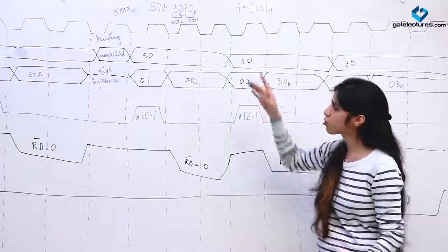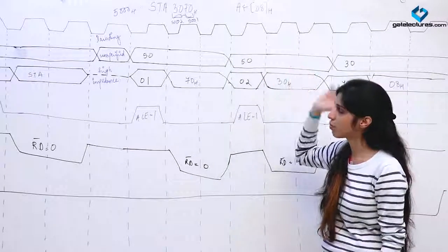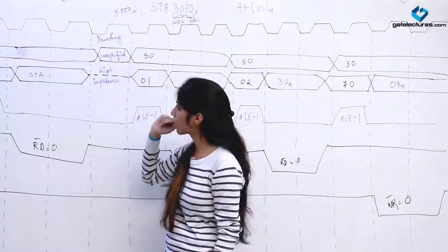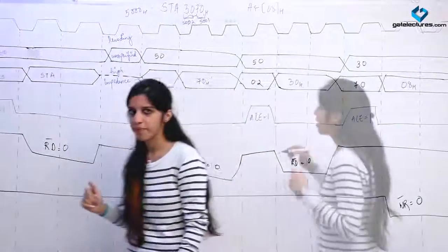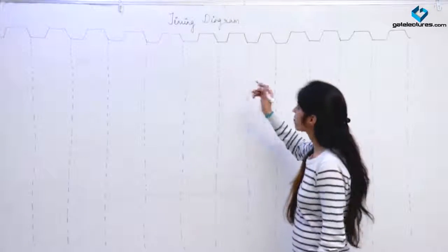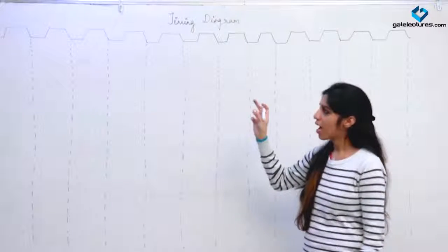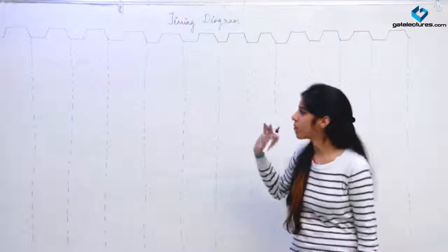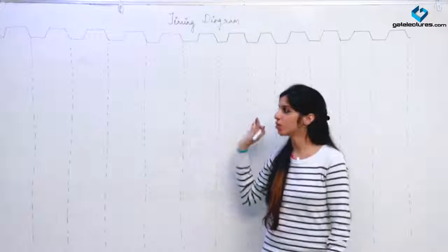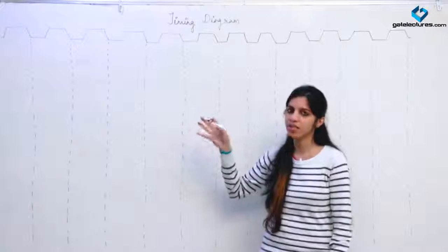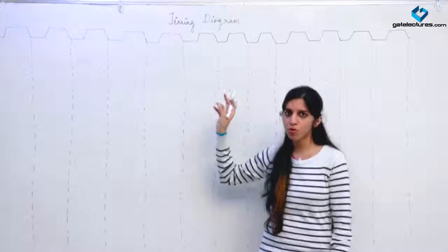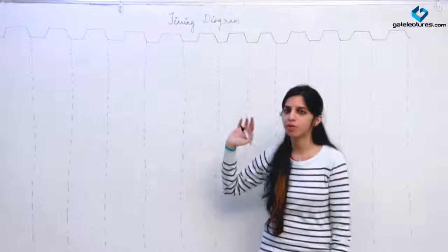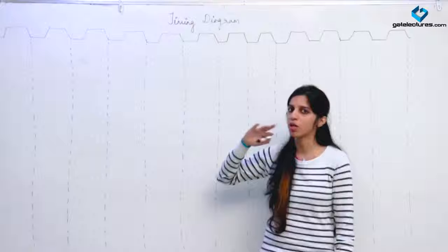So this is the timing diagram for storing the contents of the accumulator at a particular memory location. Next we are going to look at the timing diagram for input/output write or input/output read. This is the last timing diagram — for the instruction used for input/output write. All the instructions we have seen previously were working with the memory: reading from memory, writing to memory, or doing operations inside the microprocessor.